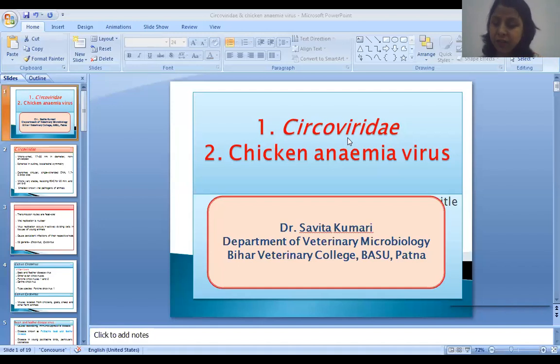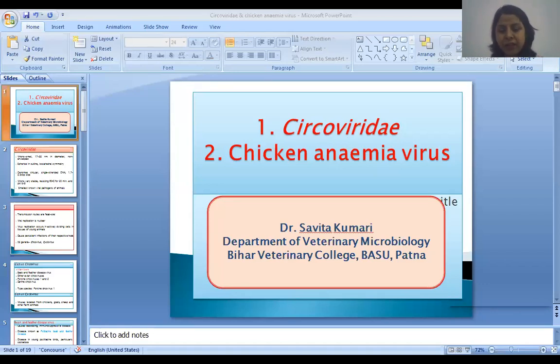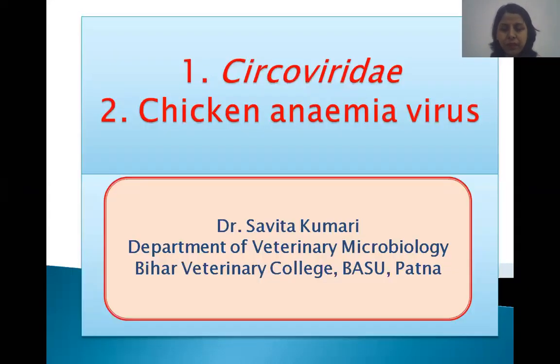Hello students, today's topic is Circoviridae and chicken anemia virus. Circoviridae is a virus family having single-stranded DNA viruses. Earlier, chicken anemia virus was also included in the Circoviridae family, but now it belongs to a separate family, Aniloviridae family.